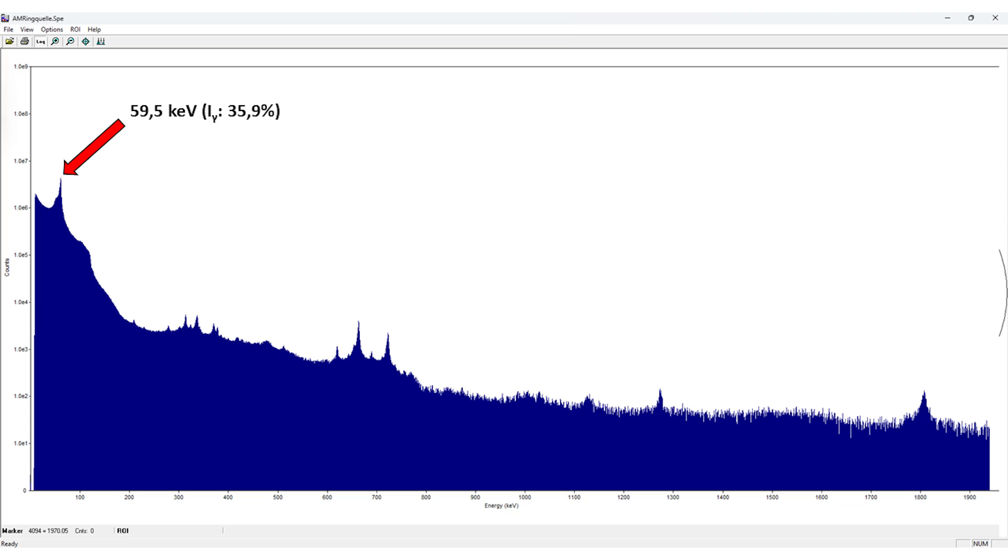This is where the fun begins. With 50% dead time, a spectrum was recorded with a lifetime of 1750 seconds. The 59.5 keV americium-241 line is quite obvious with an occurrence probability of 35.9%. And americium-241 has many other gamma lines with very low occurrence probabilities.